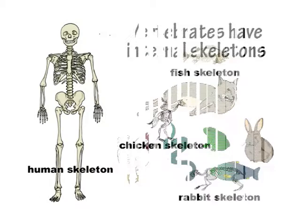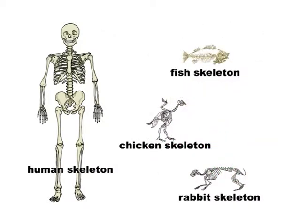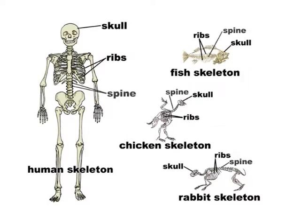If you compare the skeletons of a chicken, a fish and a rabbit with that of a human, you can see the bones come in different sizes and shapes. But the skeletons are similar in that they all have a skull, ribs and a spine or backbone.